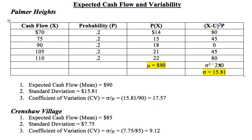We sum those up and get 250. That is not the standard deviation — that is the variance. Don't get the variance confused with the coefficient of variation, which I'll explain shortly. We have a variance of 250; we take the square root of that and we get the standard deviation of 15.81. So to summarize, we had three questions to solve. The first was the expected cash flow, which is 90. The second was the standard deviation, which is 15.81.